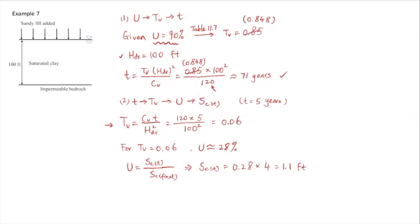Start from the Tv time factor calculation. You substitute cv, that's 120, small t of 5 years, and HDR of 100 feet. If you substitute all these values, the time factor Tv is 0.06.